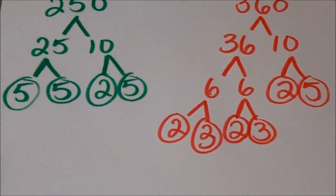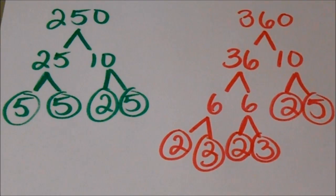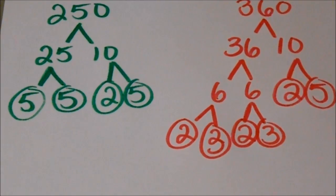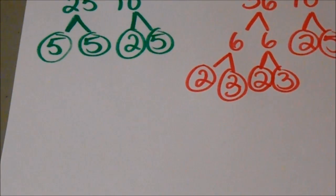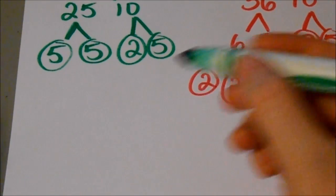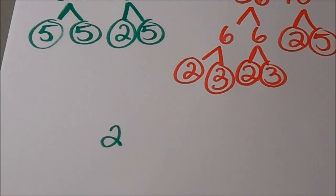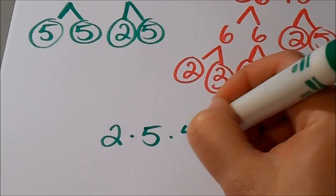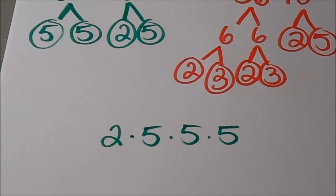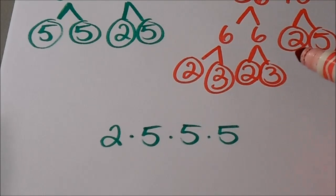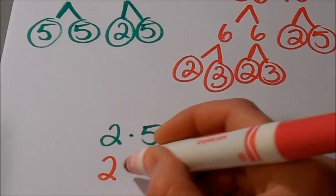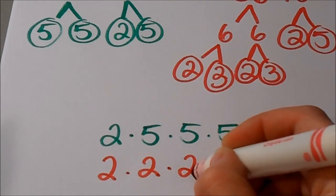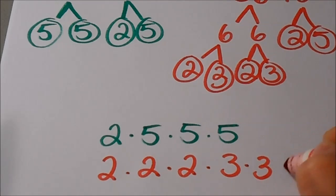So I have all of my prime numbers listed for each of my larger numbers. It makes it really easy if you list them out from smallest to largest. So my prime factors for 250 are: 2 times 5 times 5 times 5 times 5, and my prime factors for 360 are: 2 times 2 times 2 times 3 times 3 times 5.